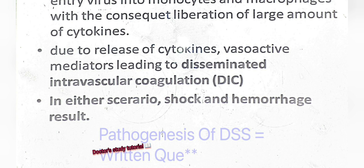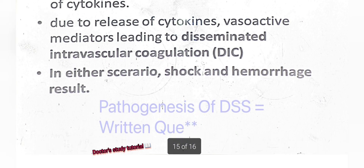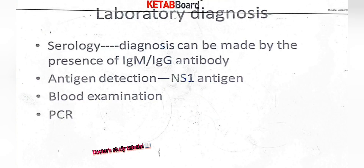The pathogenesis of dengue shock syndrome is a written question and an important question. For laboratory diagnosis, serology is used — diagnosis can be made by the presence of IgM and IgG antibodies. Antigen detection by the NS1 antigen, blood examination, and PCR are also used.